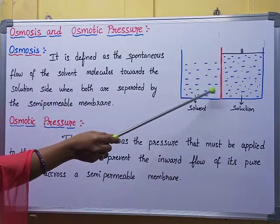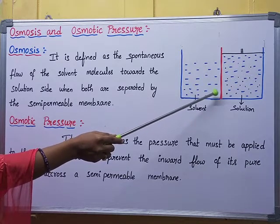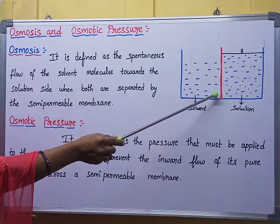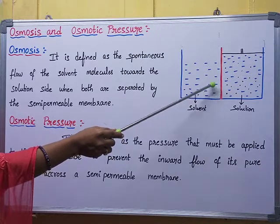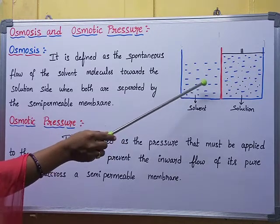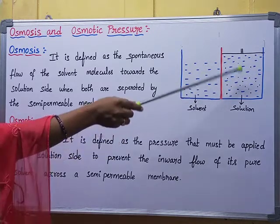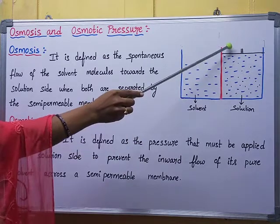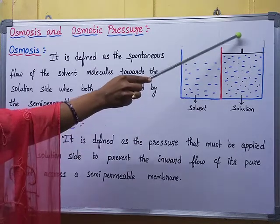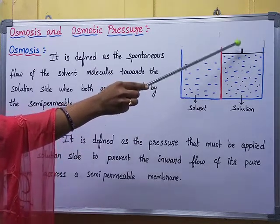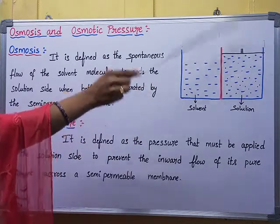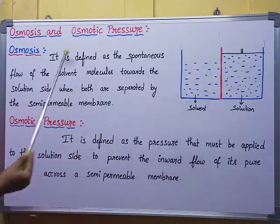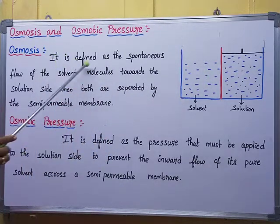The semipermeable membrane can allow only the flow of solvent molecules through it. It cannot allow solution molecules through it, because solution consists of both solute and solvent. On the top of the diagram, you can see a piston used to apply some pressure.